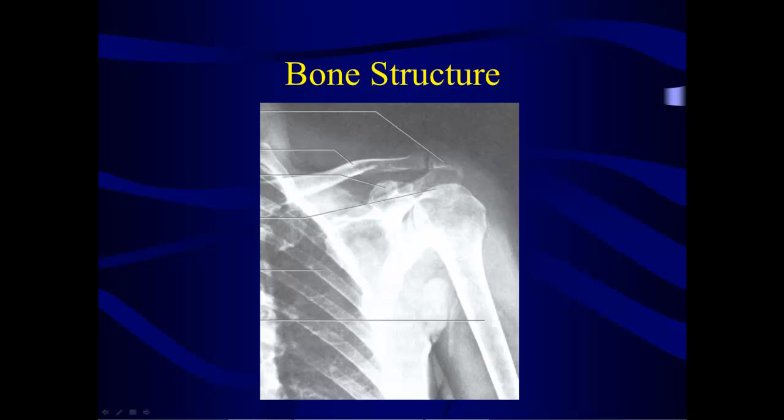The first thing I want to talk about is the difference between bone tissue and your bones. Bone is a term that can refer to both of these. In one sense we're talking about an actual tissue — and you will remember from your tissue lecture that tissues are aggregates of cells of the same type that come together and produce a related function. So bone tissue is contained within your bones.